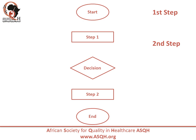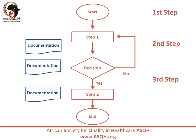Second step: list major steps, or tasks, and decision points. List, in sequential order, each of the major steps or tasks and decision points that occur as part of the process between the start and end points. Third step: use standardized graphical symbols to show documentation of the process.